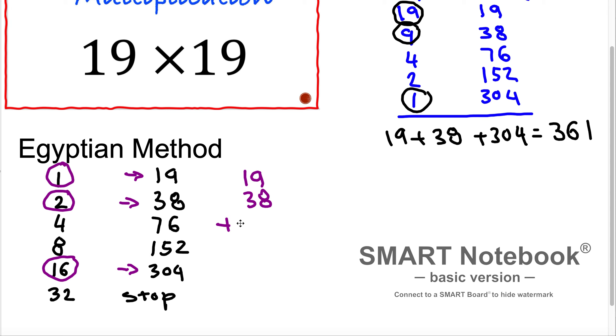304 plus 38 plus 19. Adding column by column: 4 plus 8 is 12 plus 9 is 21, write 1 carry 2. 2 plus 1 is 3 plus 3 is 6. And here is 3. So in both methods we came to the conclusion 19 times 19 is 361. And we verified this just with addition.